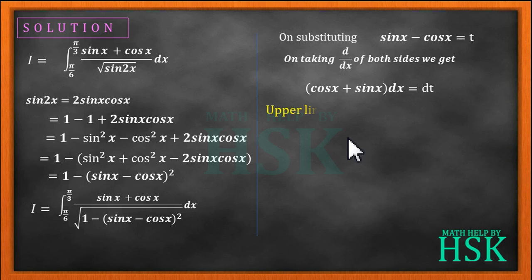The value of upper limit will change to sin pi by 3 minus cos pi by 3, equal to root 3 by 2 minus 1 by 2 or root 3 minus 1 upon 2.